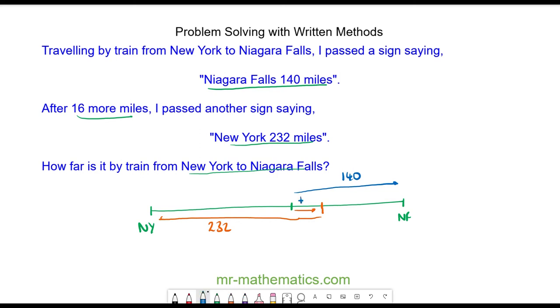And because we're adding 16 to here, we know this distance will now be 140 minus the 16, which is 124. So the total distance from New York to Niagara Falls will be the sum of 232 and 124.